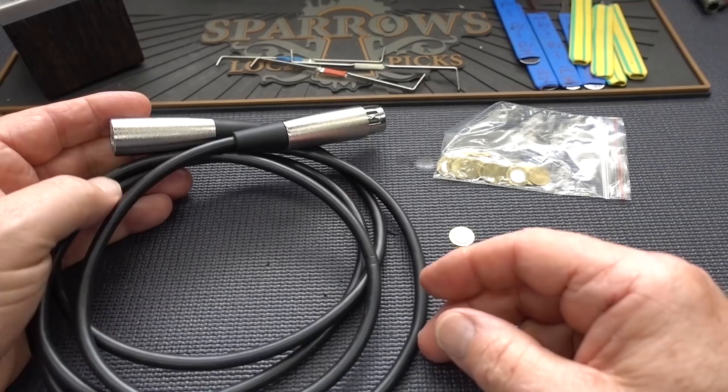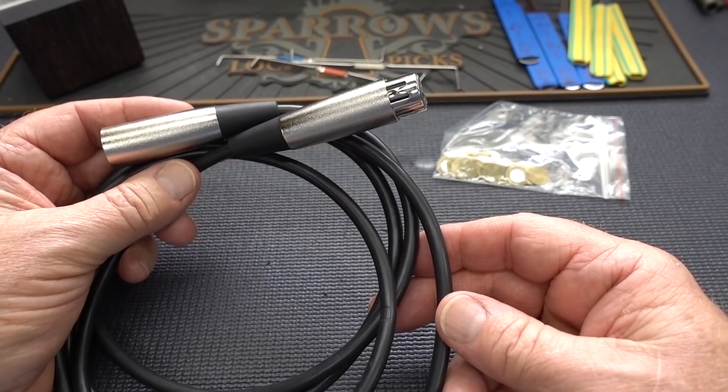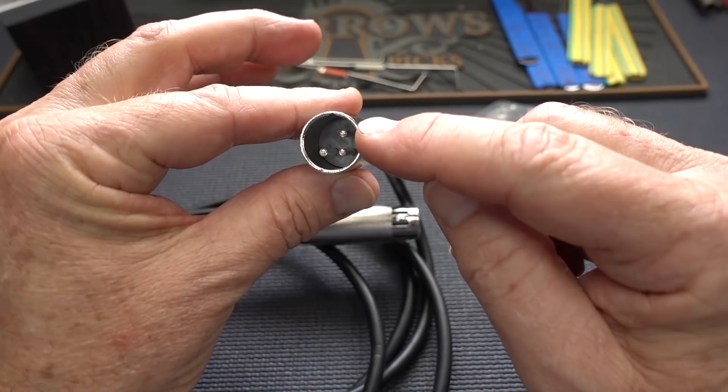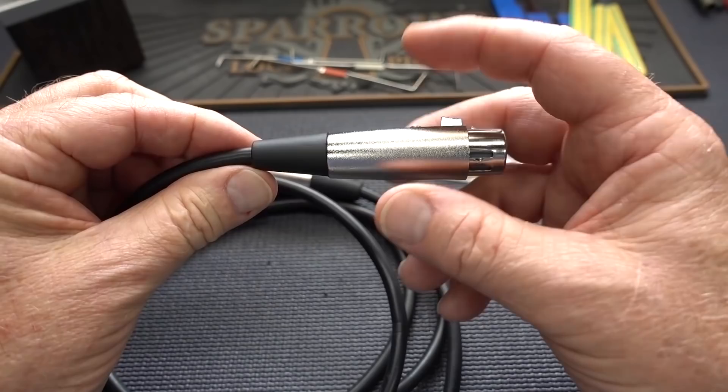Alright guys, today I'm going to try to make a lock picking microphone. In order to do that, I have a microphone cable. I have XLR inputs into my digital recorder. So I bought an XLR microphone cable. This is the end that will plug into the digital recorder, and this is the end that usually plugs into a microphone.